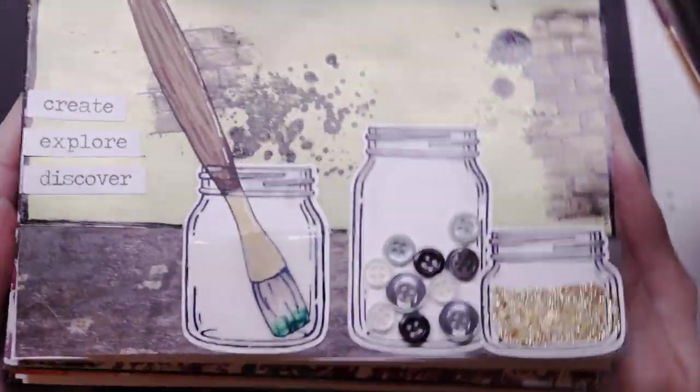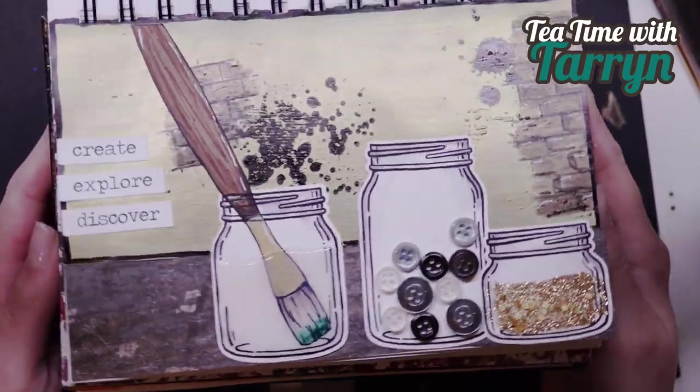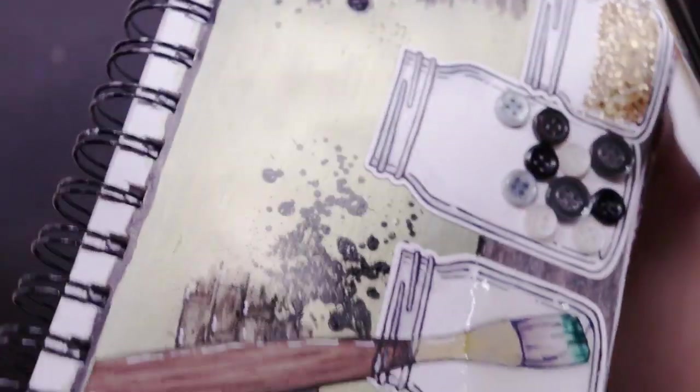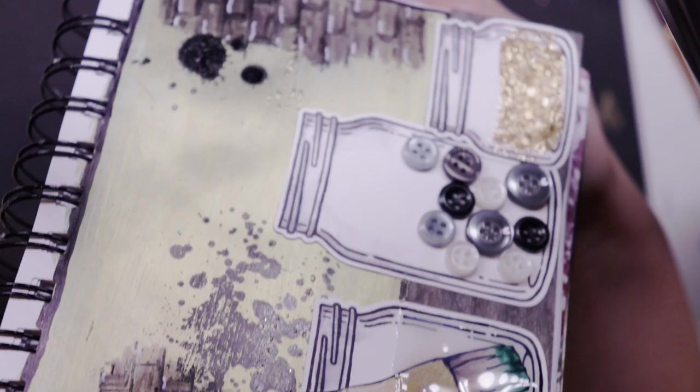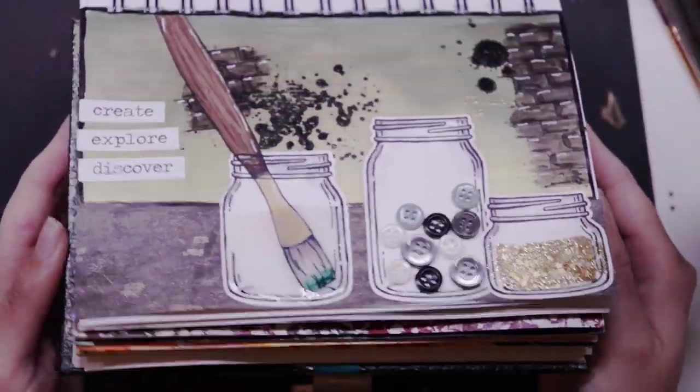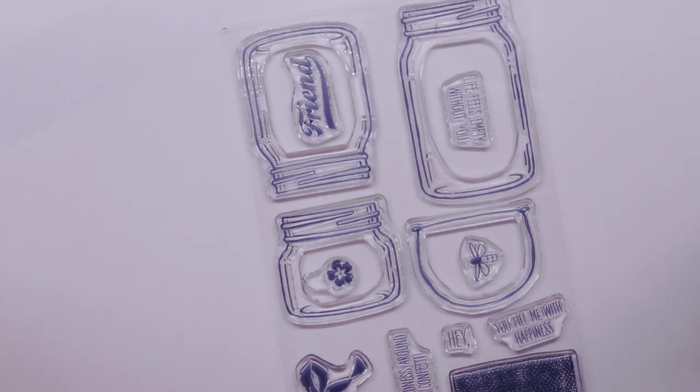Welcome to this special episode of Tea Time with Taryn. Today I'm going to be showing you how to turn your old powder eyeshadow into paint, and I've done that on this journal page in the background here. So to get started, I'm going to be stamping out some jar stamps from this set and I have the corresponding thin lids to cut them out.